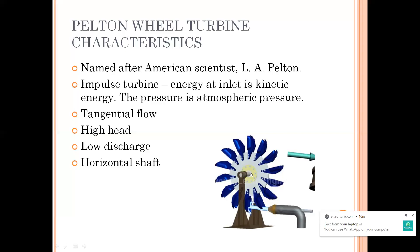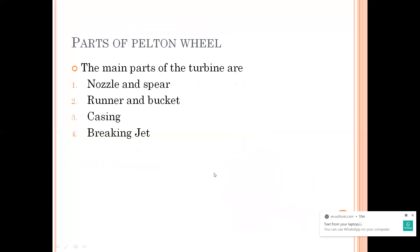Your shaft is the portion which is attached — it is said to be horizontal if it is on the horizontal plane. This is my runner and this is the shaft, so if the shaft is along the x-axis it is said to be horizontal. Now coming to the different parts of the Pelton wheel turbine: the main parts are a nozzle and spear arrangement, runner and bucket arrangement, casing, and braking jet.